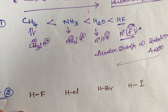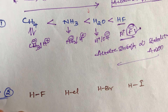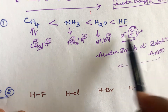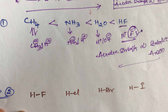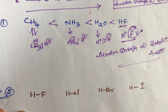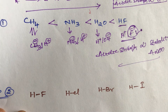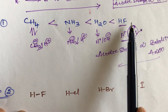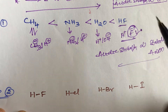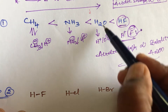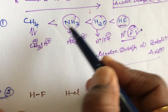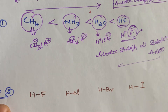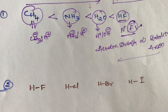So the simple tricks are: acidic strength is directly proportional to electronegativity, and electronegativity increases from left to right in a period. Therefore acidic strength also increases. The final order is: HF > H2O > NH3 > CH4.